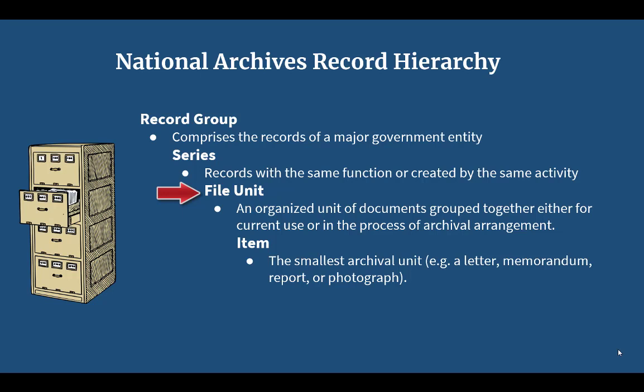A file unit is the next smaller level in our hierarchy. You can think of file units as folders within a drawer — they're not always just one folder, as sometimes the records may need to be housed in multiple folders, or a file unit could even be a bound volume. An example of a file unit is STS-47, which was the 50th space shuttle mission of the program. An item is the lowest level of description we have, representing an individual archival record and all the pages that make it up.